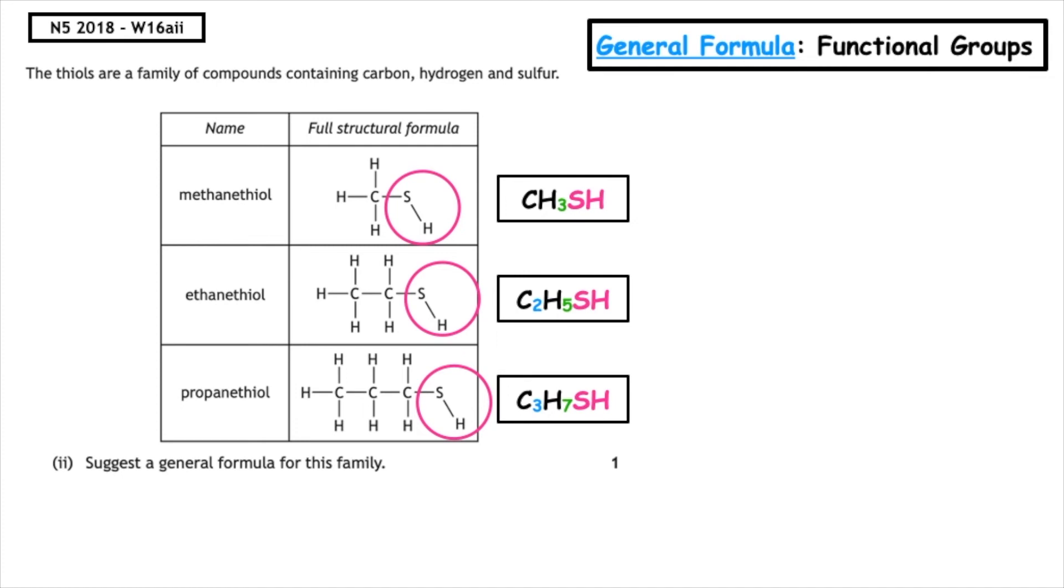We start with CnH2N. For the first one, 1 times 2 is 2, how do we get to 3? Plus 1. For the second, 2 times 2 plus 1 gives 5 hydrogens, so that formula works. For the third example, 3 times 2 plus 1 gives 7. So the general formula for the thiols is CnH2N plus 1SH.